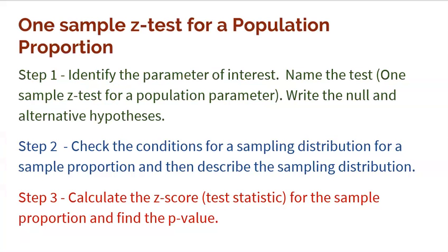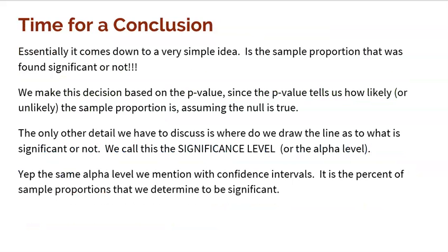We've done Step 1 — identified the parameter of interest, named the test, and written the null and alternative hypotheses. Step 2 was about believing that the null hypothesis was true and building that sampling distribution. Step 3 was getting our evidence: finding our sample proportion, getting a Z-score, and finding the p-value. Now it's time to make a conclusion.